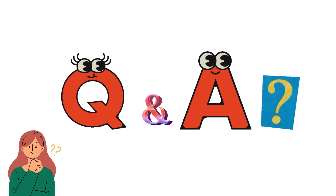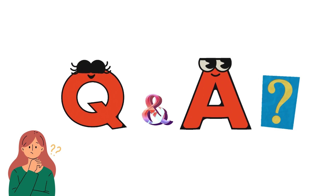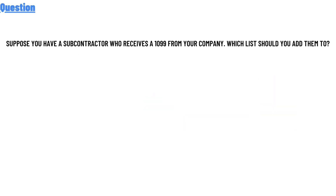Our today's question is: suppose you have a subcontractor who receives a 1099 from your company — which list should you add them to? The correct answer to the question is the vendor list.